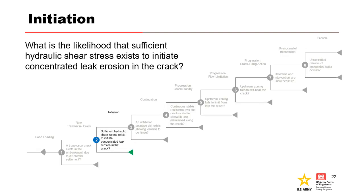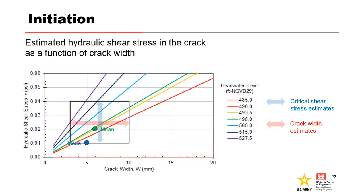Node 2: What is the likelihood that sufficient hydraulic shear stress exists to initiate concentrated leak erosion in the crack? The estimation of initiation of concentrated leak erosion involves both analytical methods and performance observations. This slide shows the RMC concentrated leak erosion initiation toolbox output that can be used to inform the likelihood of initiation.